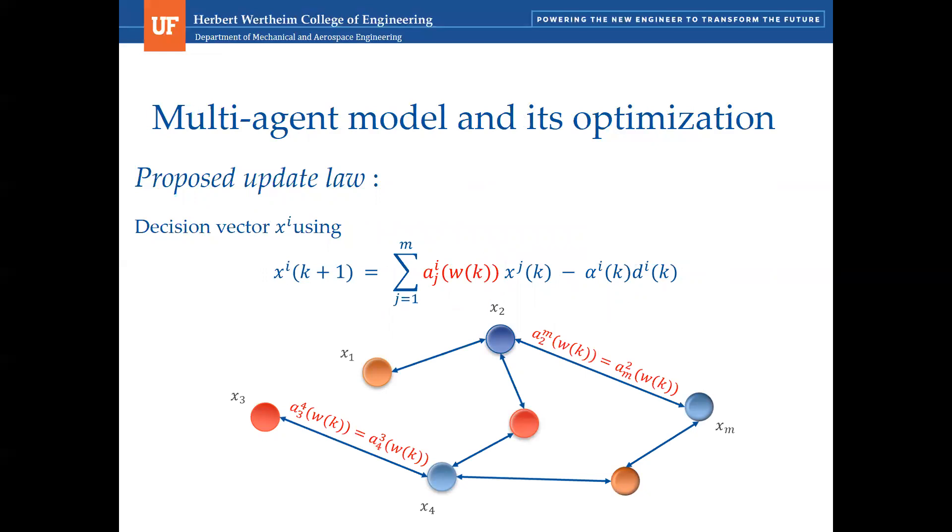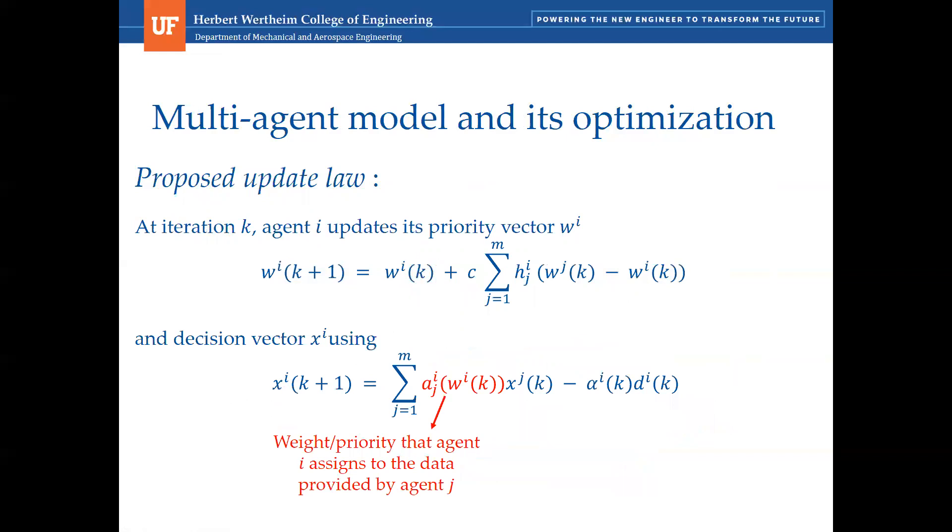Here's the update law for the decision vector. What distinguishes our algorithm from other algorithms of this kind is that the A matrix is not doubly stochastic but stochastic. This means that agent i must ensure that its weights sum to 1 but the agent doesn't need to know what the other agent's priorities are. As I mentioned, the information exchange is weighted by agent's priorities. Alpha is the gradient step size of agent i and d is the gradient vector of agent at xi.